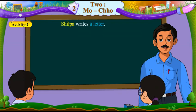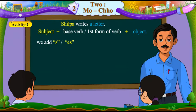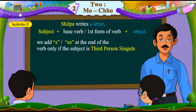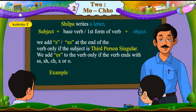The format for simple present tense is subject plus base verb or first form of verb plus object. Remember, students, we add s or es at the end of the verb only if the subject is third person singular. We add es to the verb only if the verb ends with double s, s, h, ch, x or o. For example, go becomes goes, teach becomes teaches.